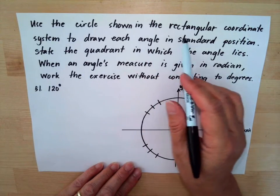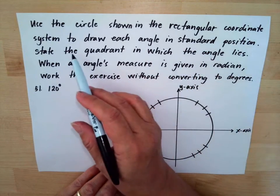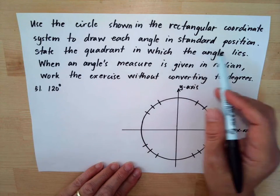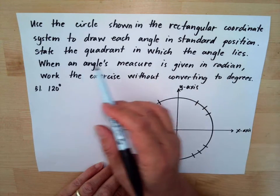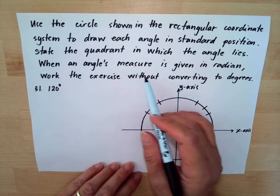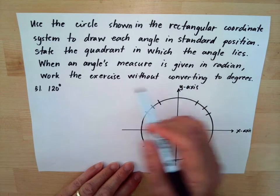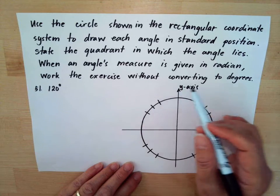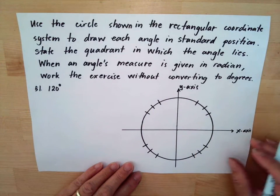Use the circle shown in the rectangular coordinate system to draw each angle in standard position. State the quadrant in which the angle lies. When an angle's measure is given in radians, work the exercise without converting to degrees.